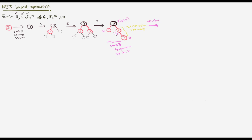In Case 1 we perform a recolor and increment the pointer to the grandparent. Recoloring makes the uncle and parent black, and the grandparent red. So node 1 (uncle) becomes black, node 5 (parent) becomes black, node 3 (grandparent) becomes red. But now the root is red, and the root must always be black, so we simply recolor the root as black. The tree is now 3 (black), 1 (black), 5 (black), 7 (red).